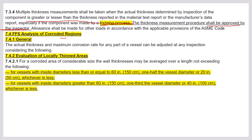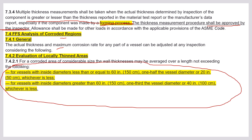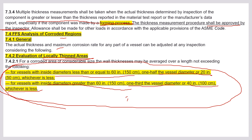Evaluation of locally thinned areas — this is a must question for the close-book exam. For vessels with inside diameter less than 16 inches, one half of the vessel diameter should be considered, or 20 inches (50 cm), whichever is less. For vessels with inside diameter greater than 16 inches, one third of the vessel diameter or 40 inches, whichever is less. For example, if the vessel diameter is 90 inches, one third = 30 inches; compared to 40 inches, you take 30 inches, which is less. This question is expected in both open-book and close-book exams.